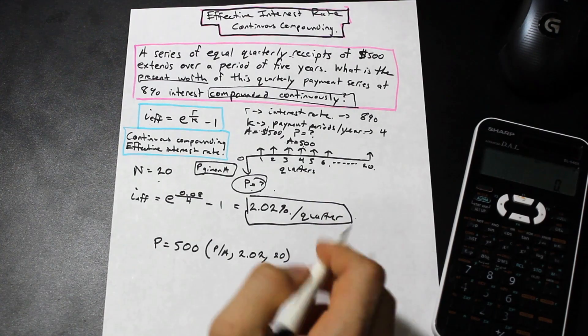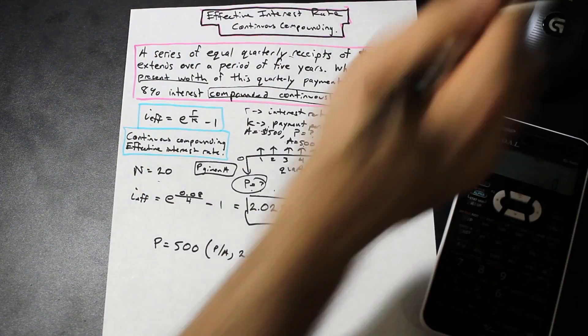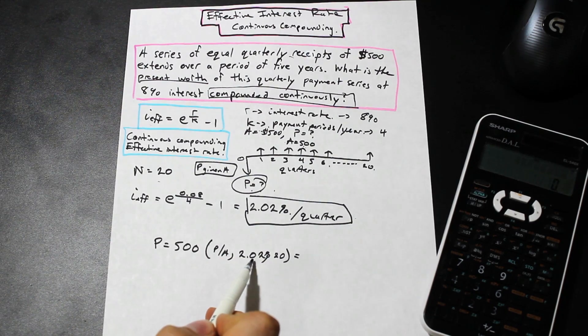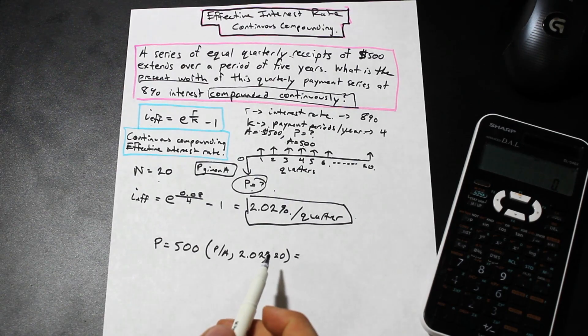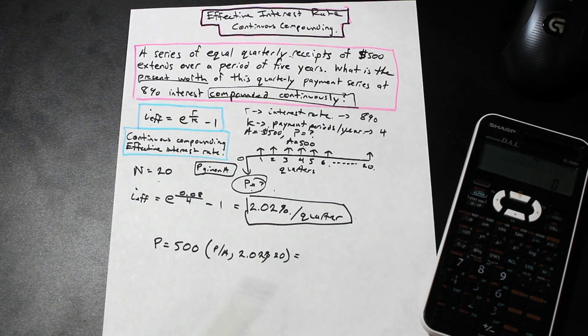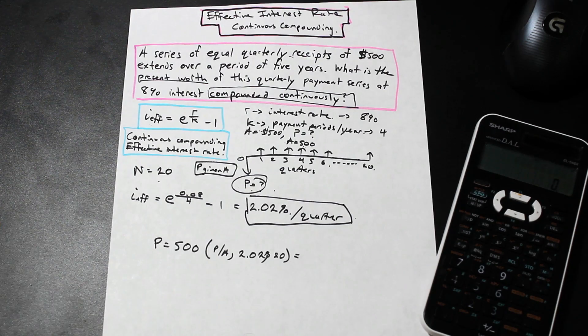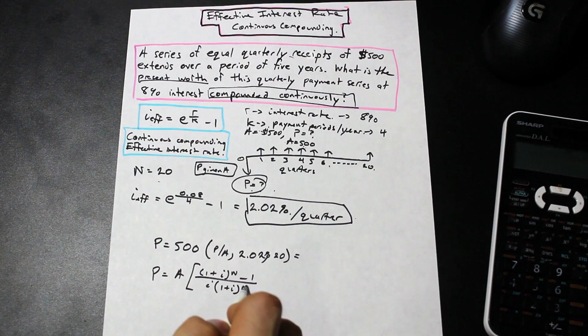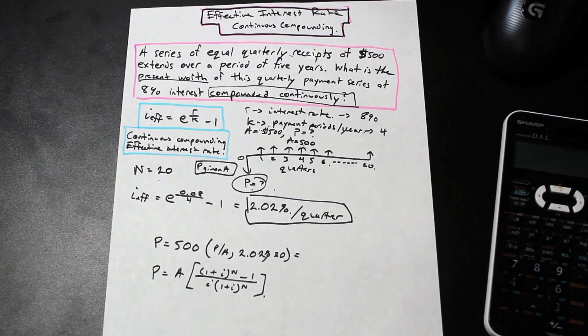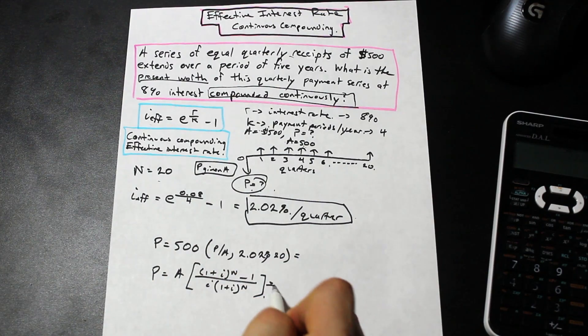We established that already. Now as we established before, we don't have a 2.02% interest table - that doesn't exist. We only have 2, 3, 4, we only have whole numbers. So when you get a decimal interest rate like this, you need to apply the formula directly in order to solve the present value. So if you take a look at the screen, I put up the formula for P given A, and we could just go ahead and start plugging in numbers. It's as simple as that.